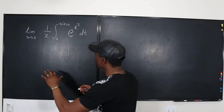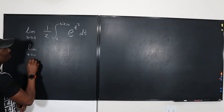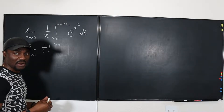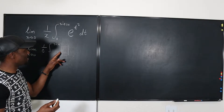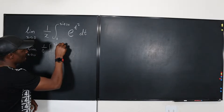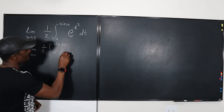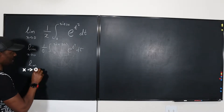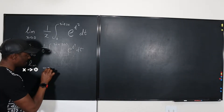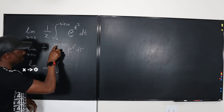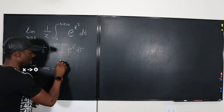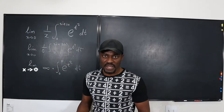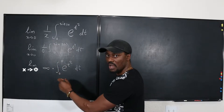What's going to happen is this becomes the limit as x goes to 0 of 1 over x times the integral. When you divide by 0 that goes to infinity, and the integral from sine of 3 times 0 — which is sine 0 — to 0 of e to the t squared dt. Sine 0 is 0, so you're integrating from 0 to 0. Something you learn from the fundamental theorem of calculus is when you integrate from the same number to the same number, you're going to get 0.